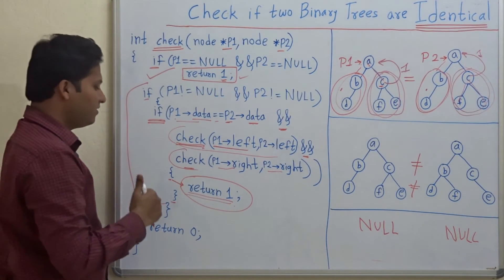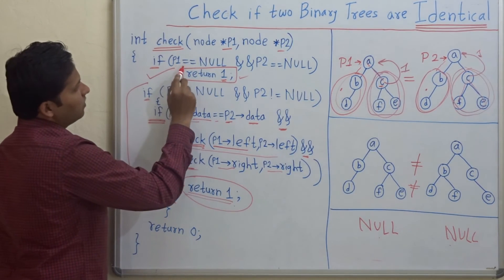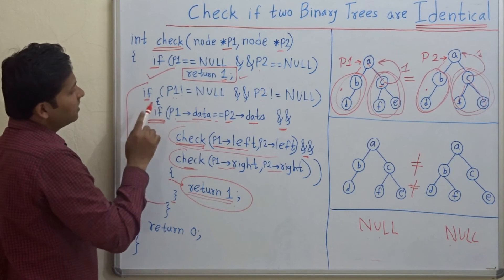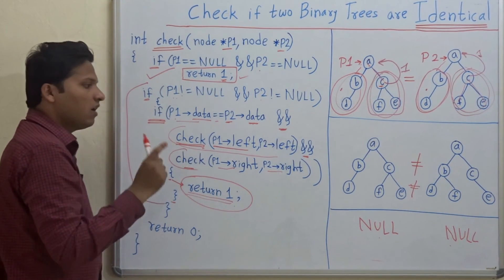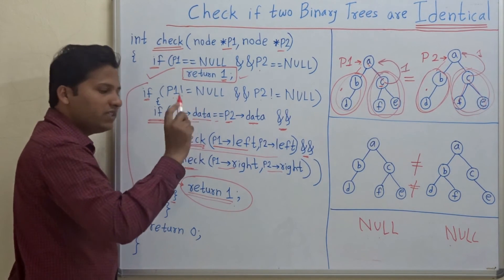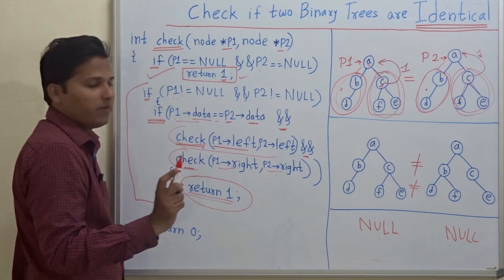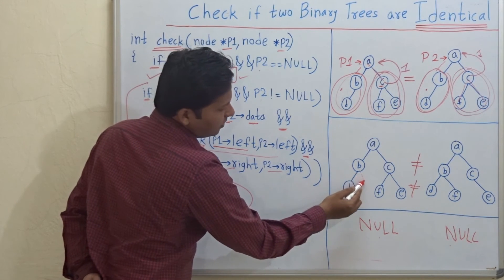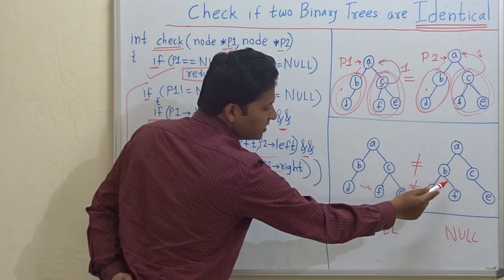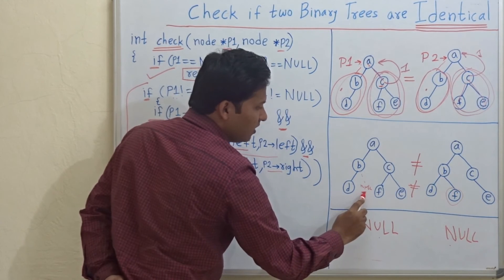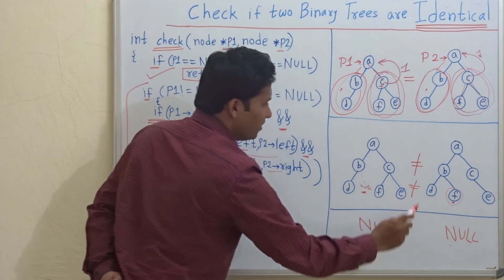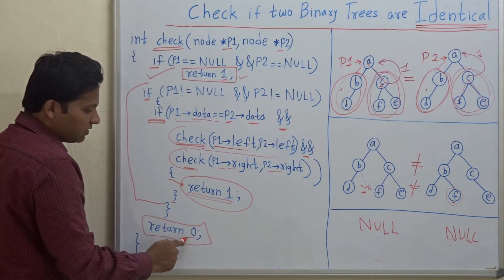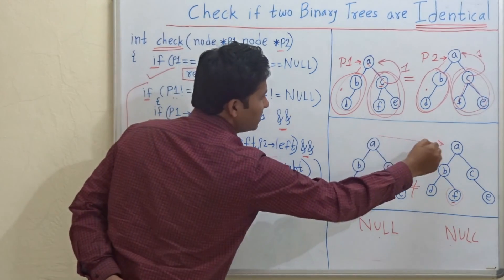Now if both are null, and both are not equal to null — if these two conditions are not satisfied — then the only remaining condition is that either one of them is null. For example, for B, the left subtree is D and the right subtree is null here, but in the second tree B's right subtree is not null. So in this case, neither if condition is satisfied, we reach the end of the function and return 0, signaling that these two subtrees are not identical.